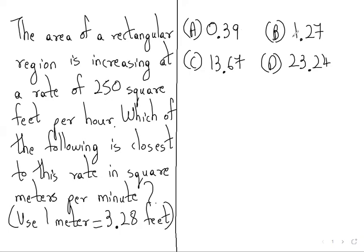Option A: 0.39. Option B: 1.27. Option C: 13.67. Option D: 23.4.